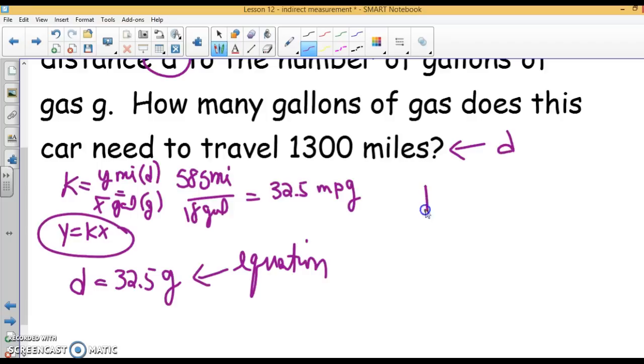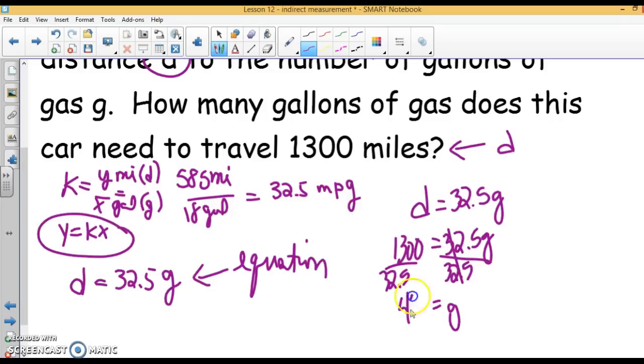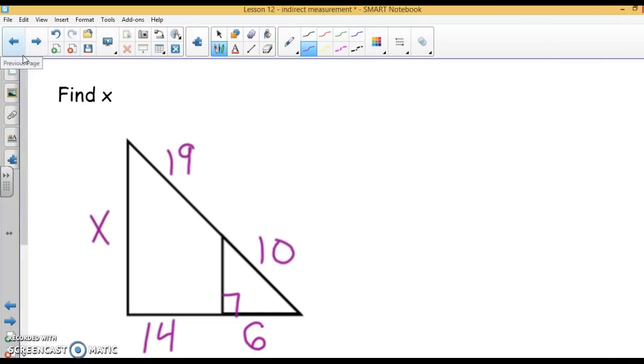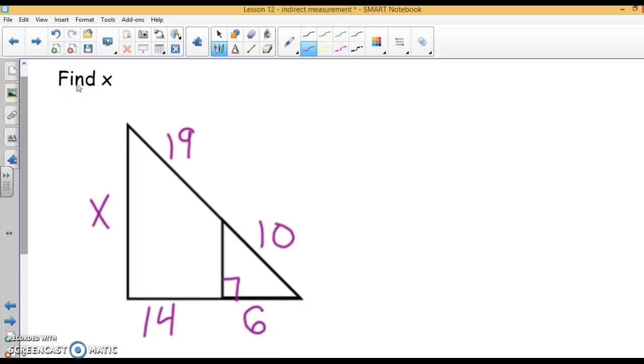How many gallons of gas does this car need to travel 1,300 miles? Using our equation d equals 32.5g, we plug in 1,300 equals 32.5g. How do I solve this for g? Divide both sides by 32.5. And g equals 1,300 divided by 32.5 is 40. I want you to pause your video and do this problem.